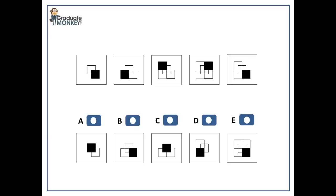In this series, the pattern is formed by a black square producing increasing numbers of white squares. Specifically, the black square moves clockwise one step at a time from one pattern to another, creates one square and leaves it behind. For example, in the second pattern, the black square moves one step clockwise and leaves one white square in its current place. In the third pattern, the black square moves one more step and leaves another white square.